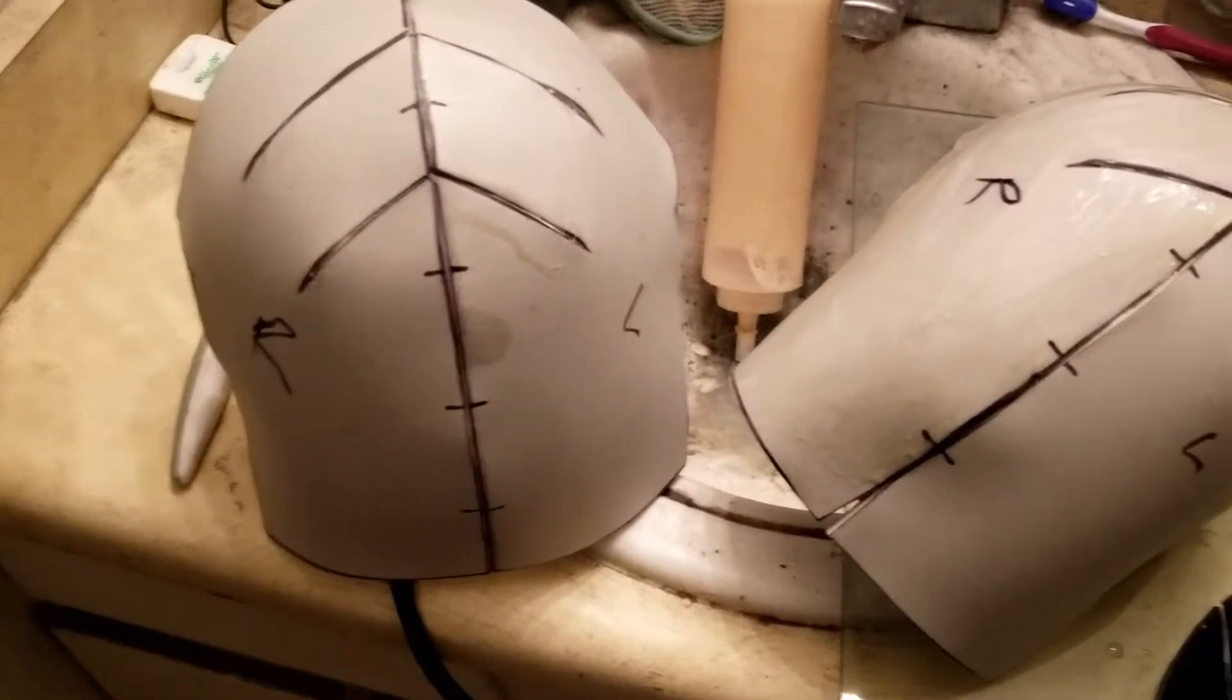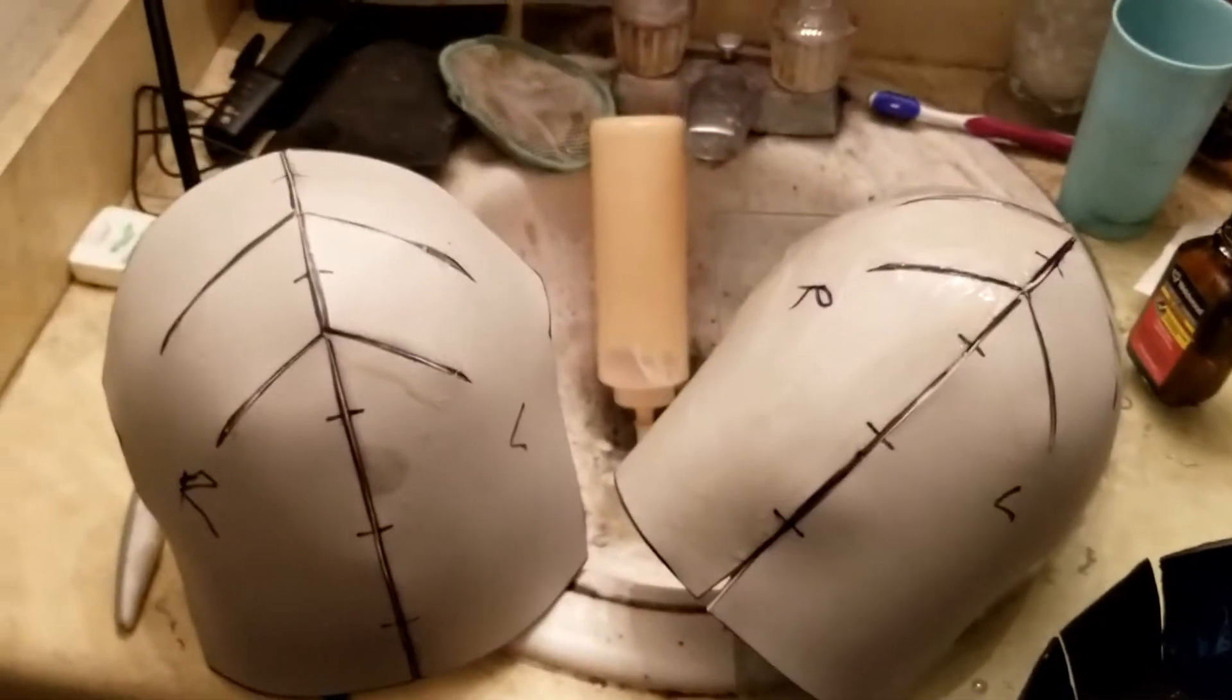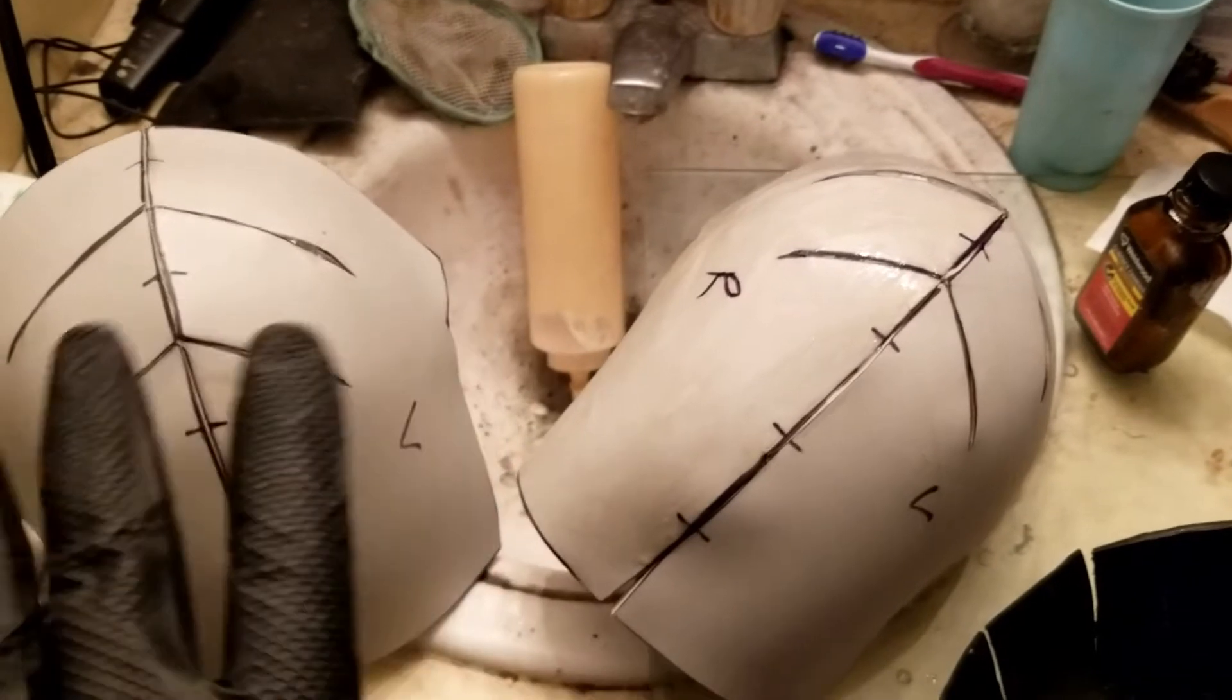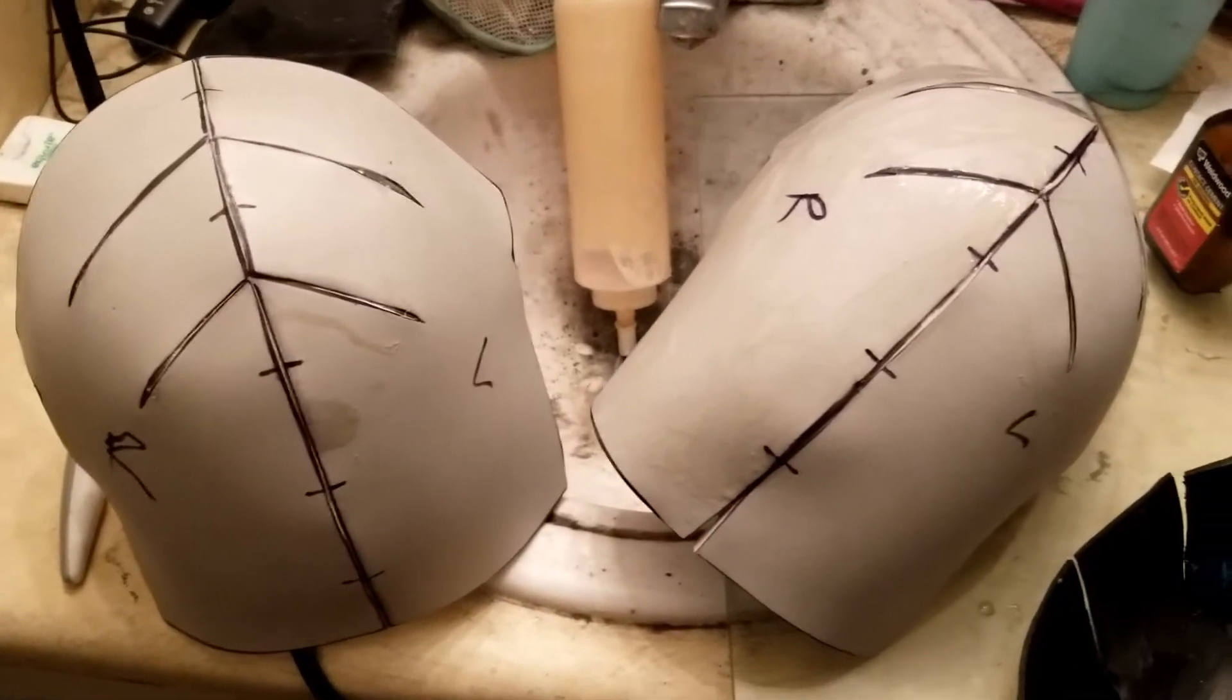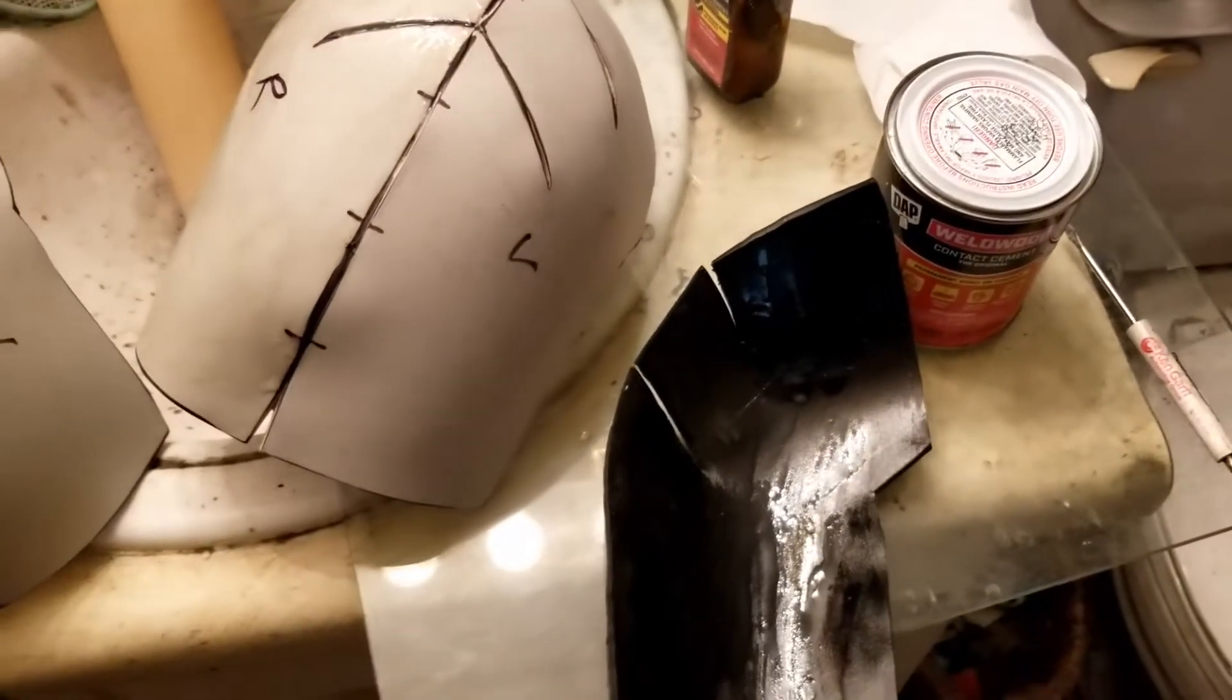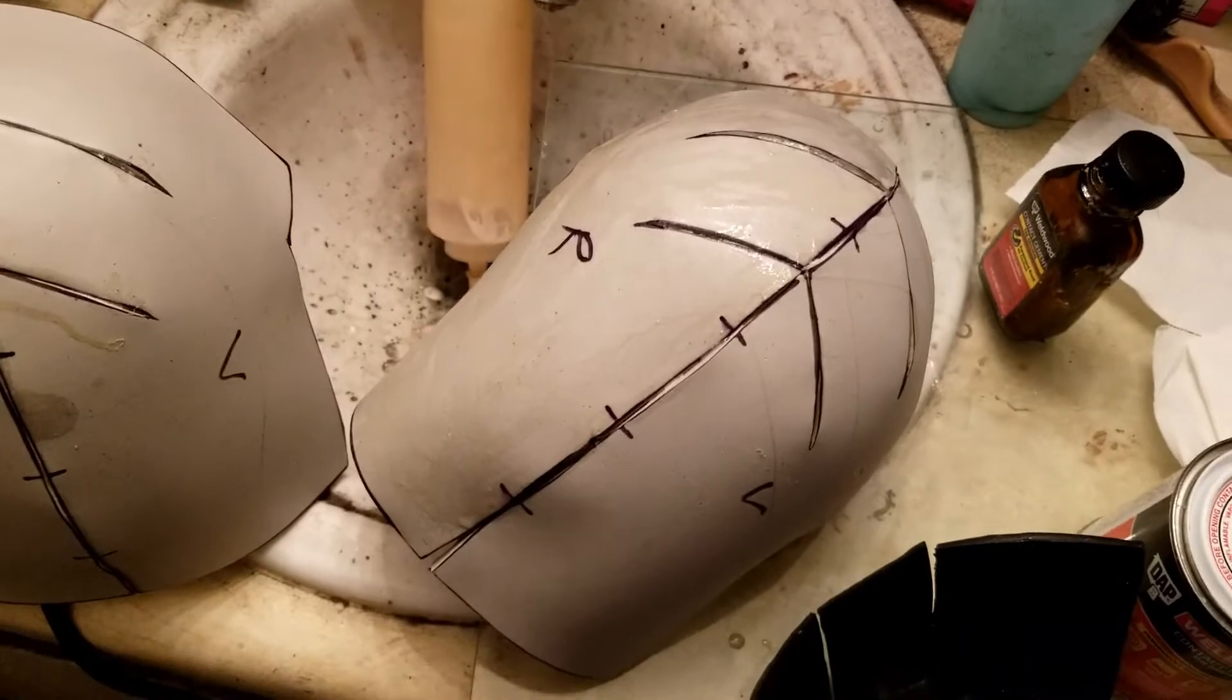As you can see, I'm working in the bathroom, which passes for my workshop when I'm working with stuff that shouldn't be worked with in the bedroom. At this point, I've got the base layers of Thomas at Much Props shoulder pauldrons built. I have the sections of centra skin heat formed and I'm getting ready to glue them on to the foam pauldron.